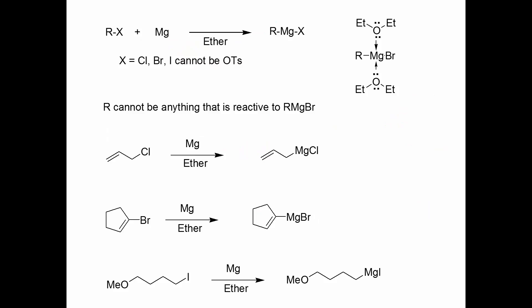What about the Grignard reaction? The Grignard reaction is almost always done in ether, and our limitation is pretty much the same as with organolithiums — X has to be chlorine, bromine, or iodine. Tosylate is not an optional substitute for a halogen in this reaction, and the R group cannot be anything that's reactive to a Grignard reagent. The reaction is almost always done in ether because magnesium complexes to the oxygen lone pairs in ether groups, which stabilizes the Grignard reagent.